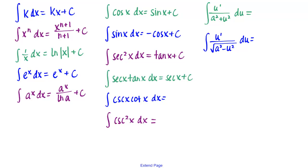The integral of cosecant x cotangent x dx is negative cosecant x plus c. And the integral of cosecant squared x dx is negative cotangent x plus c.